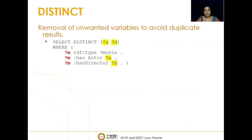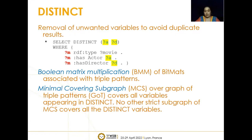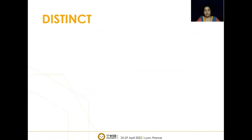Now we come to the last component: distinct. Distinct is used to remove duplicates, which can happen in a SPARQL query if two variables are connected through another variable — like movie variable M connecting actor and director. If those actors and directors worked in multiple movies, we get duplicate results without the distinct clause. Our purpose is to remove the unwanted variable M without changing the correctness of results. For this we use Boolean matrix multiplication of bitmaps associated with triple patterns to carve out a minimal covering subgraph (MCS) — a graph over triple patterns that covers all variables appearing in distinct, and no strict subgraph of MCS covers all distinct variables.